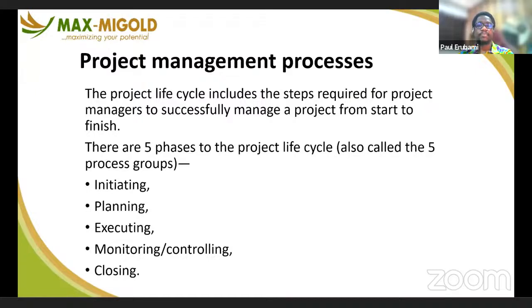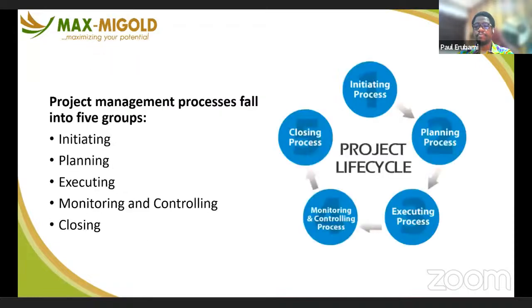The project management process includes what we call the project life cycle. That project life cycle includes several steps required for the project manager to successfully manage a project from start to finish. There are five phases: the initiating phase, the planning phase, the executing phase, the monitoring and control phase, and the closing phase. This project management process falls into these five groups, and every project normally goes through this life cycle.